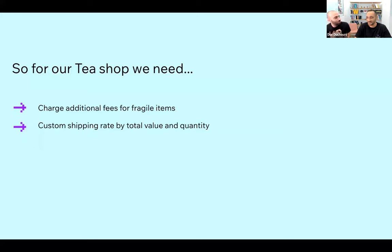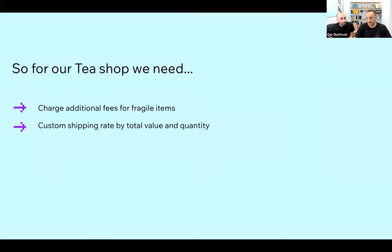Let's go back to our tea shop and our custom requirements that we can't answer using our native offering today. The first gap we introduced is that we want to charge an additional fee for fragile items. We also want to offer a shipping rate that is calculated by total value and total quantity of the order. Let's tackle those gaps one by one.